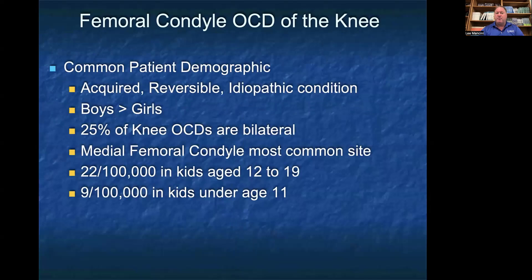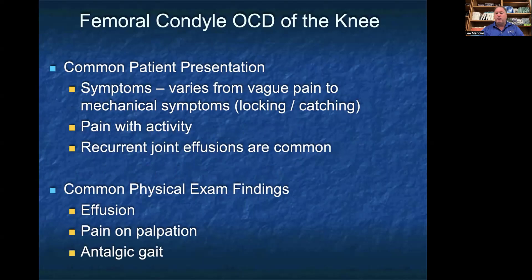Femoral condyle OCDs are common. They're an acquired, reversible, idiopathic condition, more common in boys than girls. About 25% of the time, if you find a femoral condyle OCD, they end up being bilateral. The medial femoral condyle is the most common site in the knee joint. Between the ages of 12 and 19, it's about twice as common as in kids under the age of 11 — 22 out of 100,000 for ages 12 to 19 versus 9 out of 100,000 in kids under age 11. Common presentation can really vary from vague pain to mechanical symptoms, locking in the knee, or catching pain with activity. The most common finding is recurrent joint effusions without any true history of trauma.